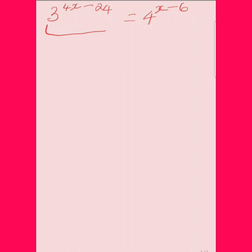I realized that in the power I'm able to factorize out the exponent. So what I really have is 3 raised to the power of 4 times (x minus 6), and this is equal to 4 raised to the x minus 6.